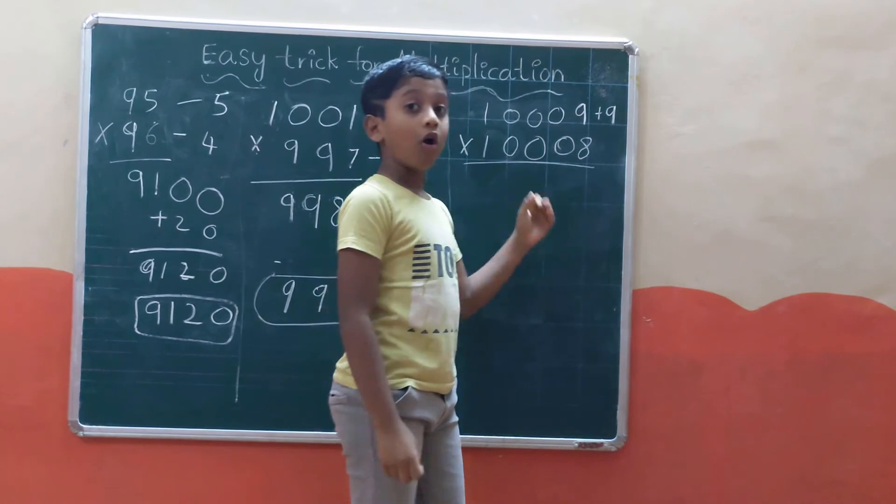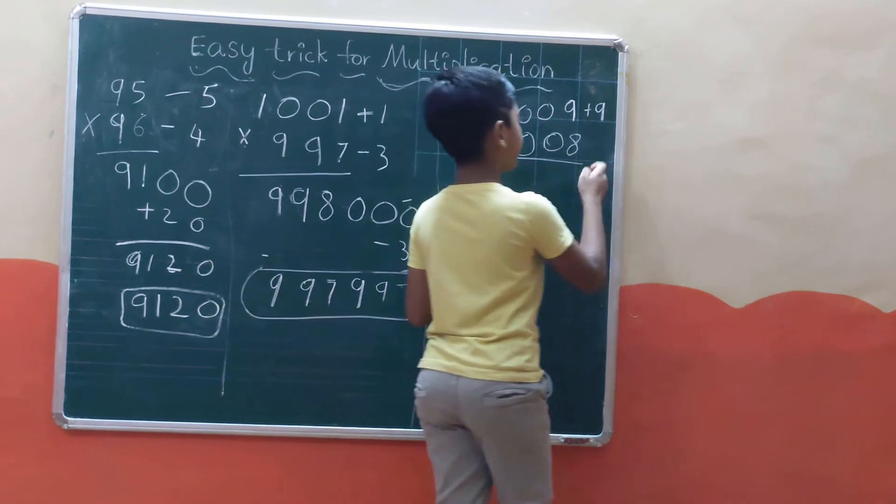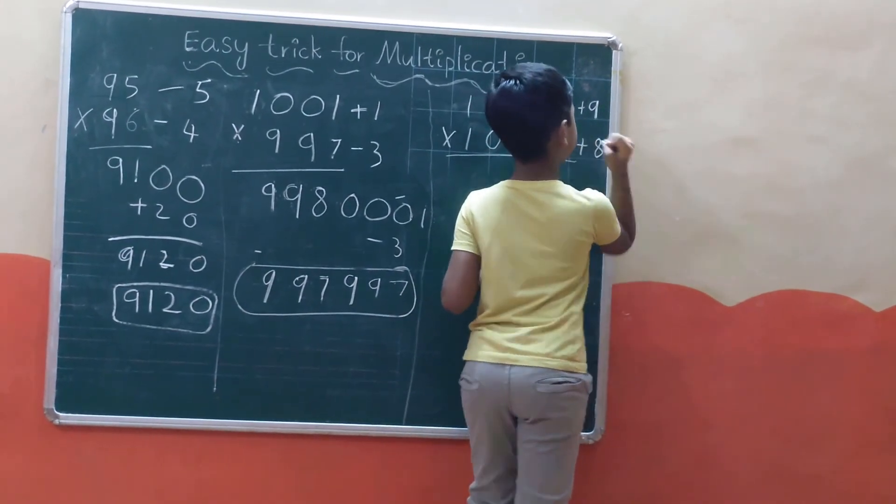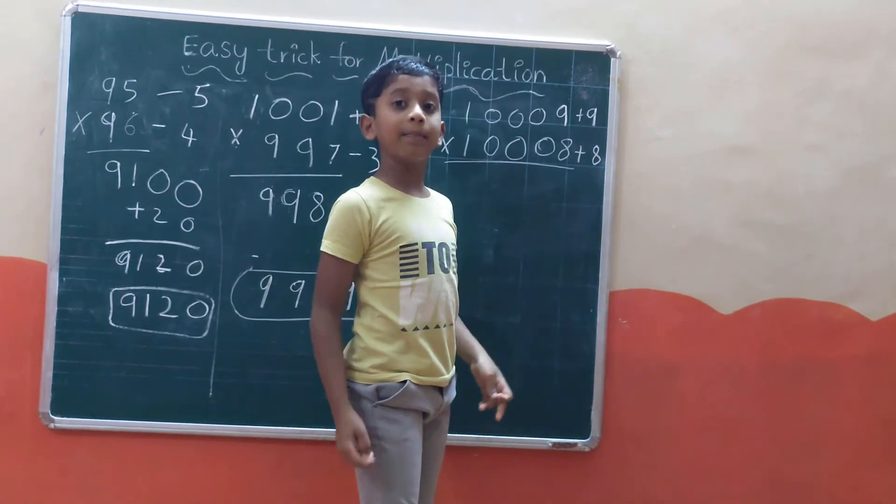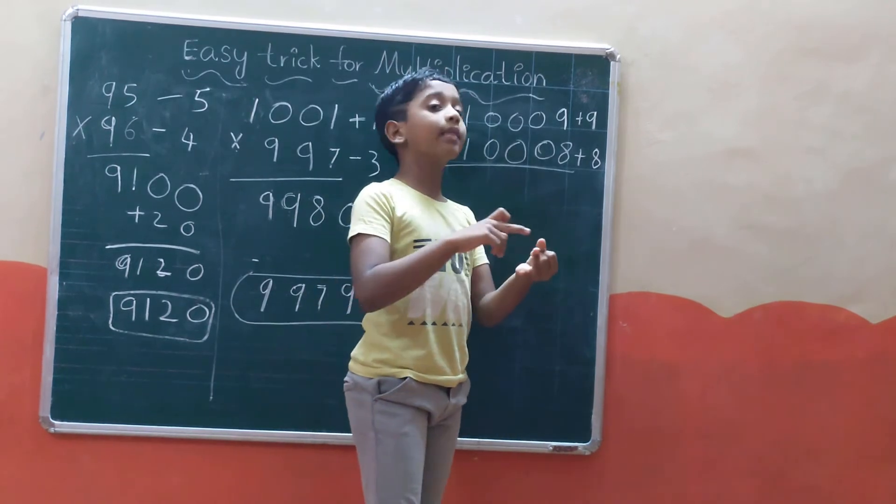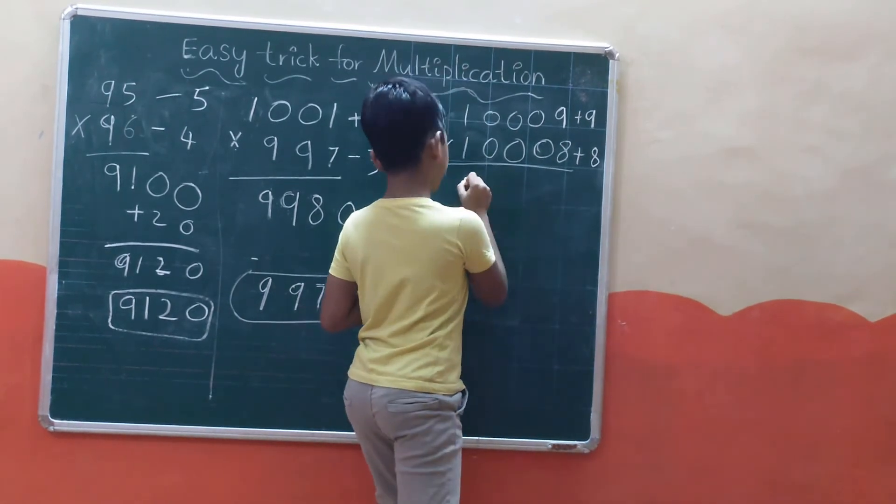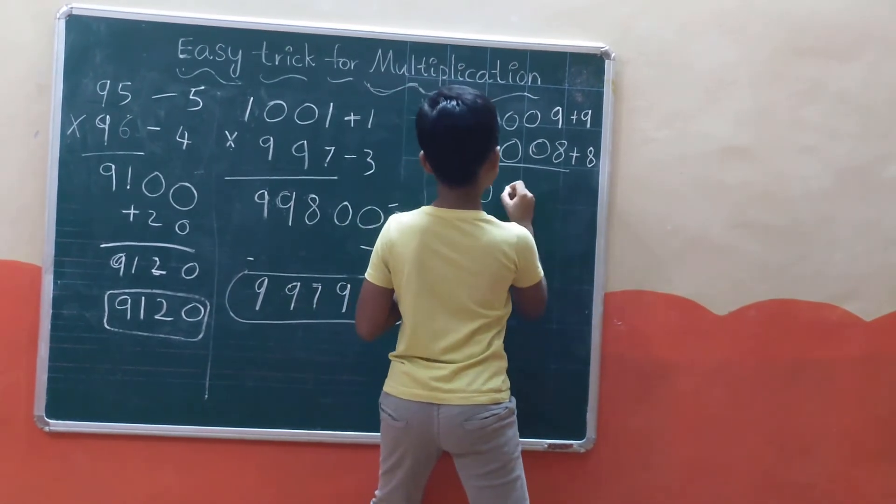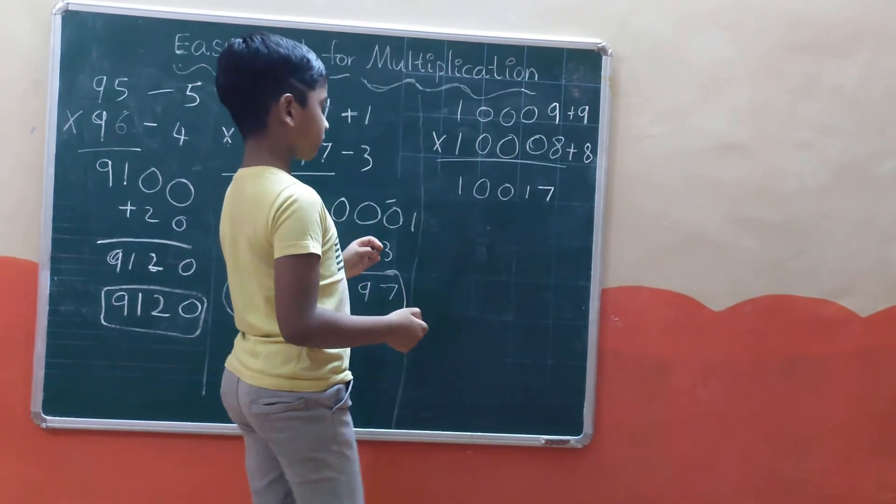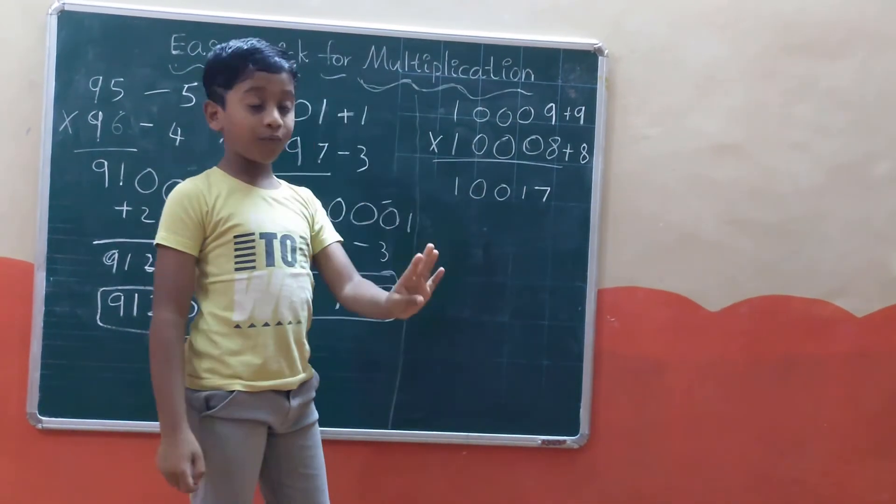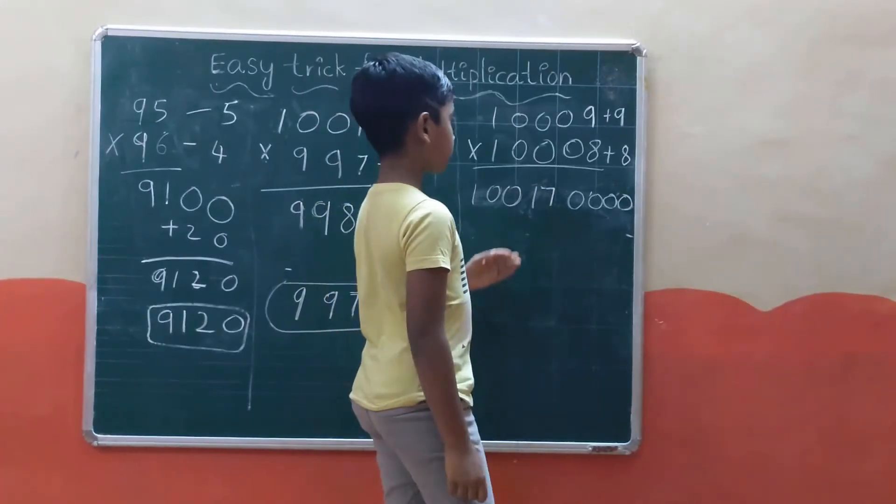Now, 9 plus 8 equals 17. After adding to 10000, we get 10017. And since we have four zeros in the base, we write four zeros: one, two, three, four.